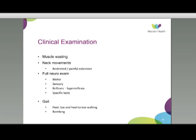Gait changes in myelopathy can be quite subtle. You can ask the patient to walk on their heels, then toes, then perform heel-to-toe walking to uncover subtle changes. The Romberg test involves getting the patient to stand upright, extend their arms in front, and close their eyes. If they have compression or injury in the dorsal column affecting proprioception, this can cause them to fall forwards.